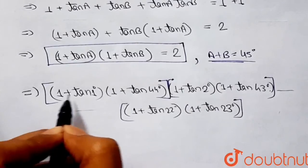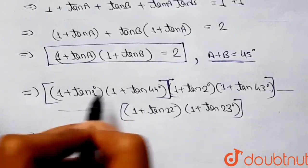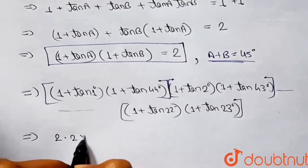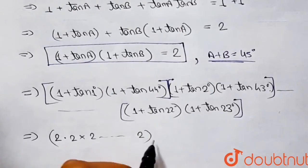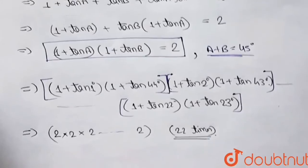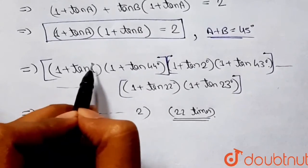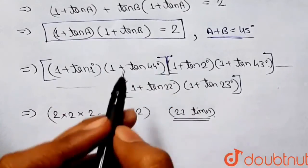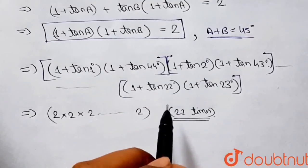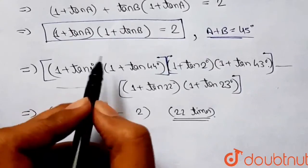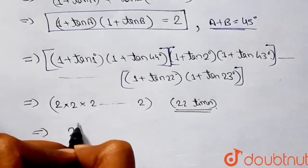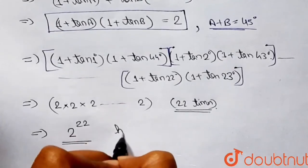So (1 + tan 1°)(1 + tan 44°) = 2, and each subsequent pair also equals 2, up to 22 pairs total. We know it is 22 pairs because the first pair has tan 1°, the second has tan 2°, and the last has tan 22°. So we are multiplying 2 exactly 22 times, which equals 2 to the power 22 — exactly what we had to prove.